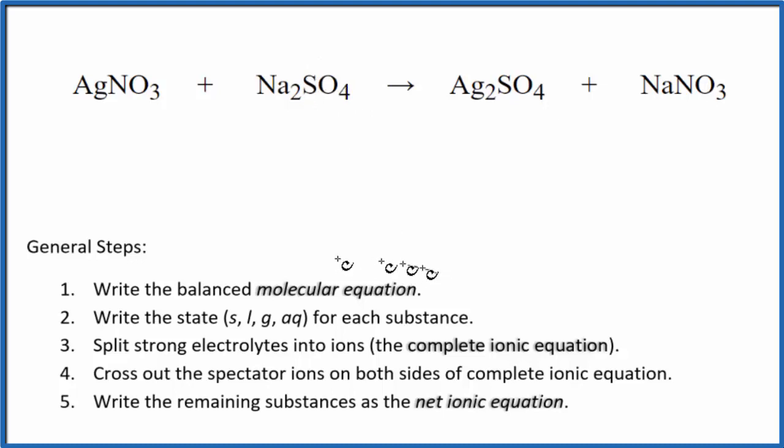First thing we need to do with net ionic equations is balance the molecular equation. I have two sodiums here and just one here, so I'll put a two as my coefficient. Then I have two nitrates here, only one here, so I'll put a two here. I have two silvers, two silvers, have a sulfate ion here and a sulfate ion here. This equation is balanced.